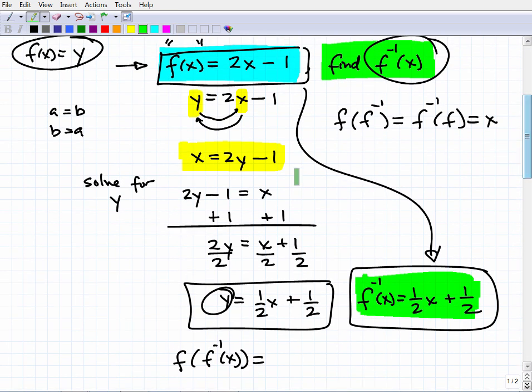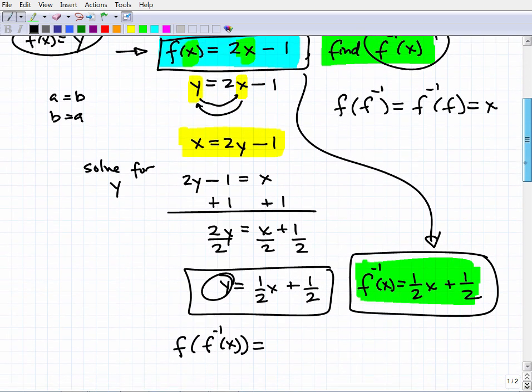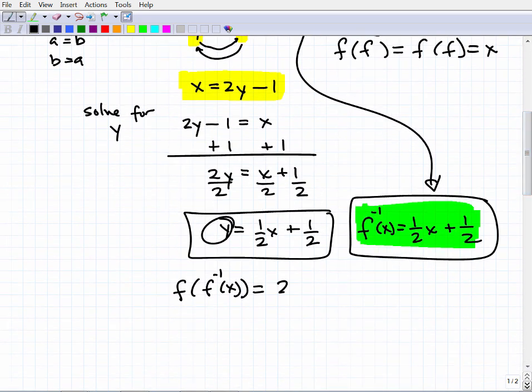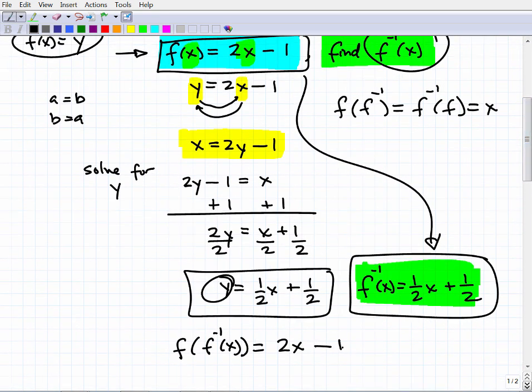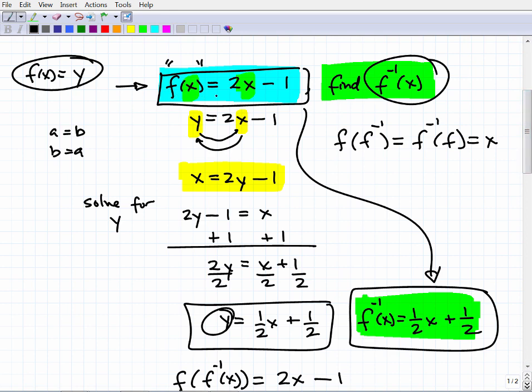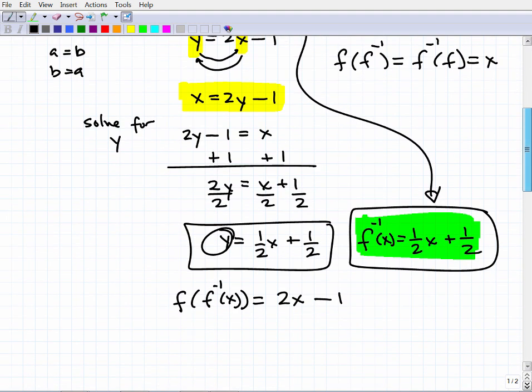Again, this is a big topic, but let me just show you how we're going to do this. Let's see what f of f of negative 1 x is going to be equal to. We'll just do one portion of this. So I'm going to plug in the inverse function. I'm going to plug it in to the original function. So the original function is 2x minus 1. So that was the original function. So remember, f of x is equal to 2x minus 1. So this, what we're plugging in, let me use a different color, this would be our x.